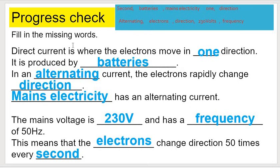Let's check your answers. Direct current is where the electrons move in only one direction, and direct current is produced by batteries or cells. Alternating current: the electrons are rapidly changing direction, and they can be produced by mains electricity or generator. Mains voltage is 250 volts and has a frequency of 50 hertz. We tested you earlier on that. And this means that electrons change direction 50 times every second. Please mark this. Do any corrections where you need to.